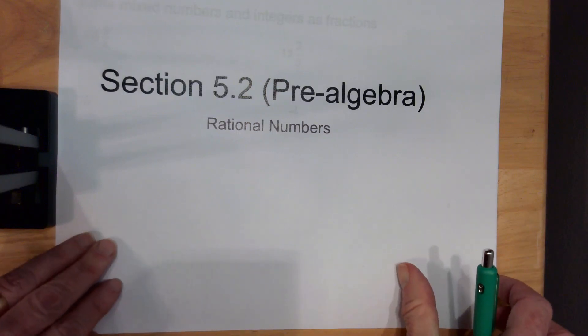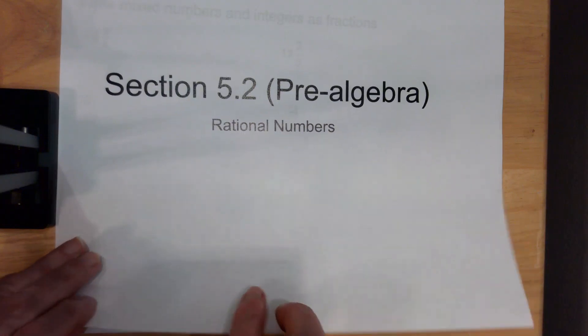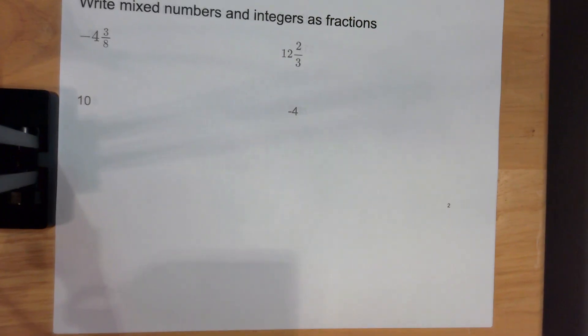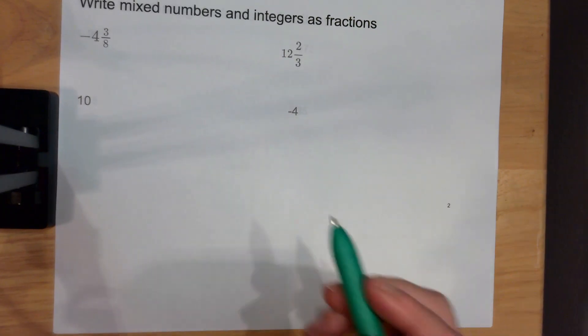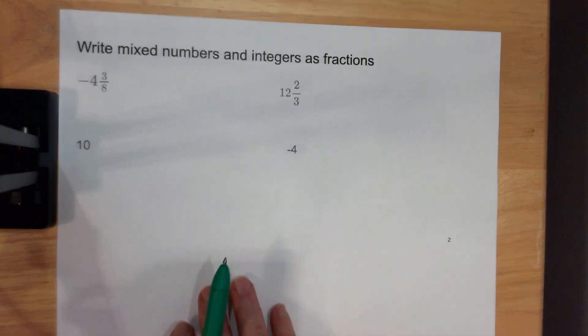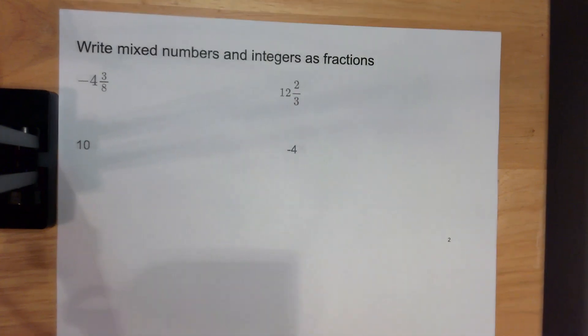Section 5-2 is on rational numbers. Let's do a little bit of foundational stuff here. A lot of this you probably know. Writing mixed numbers and integers as fractions.